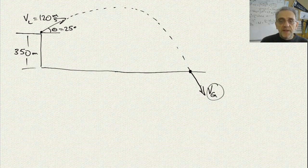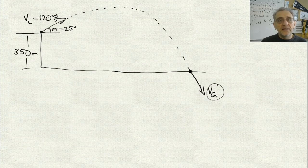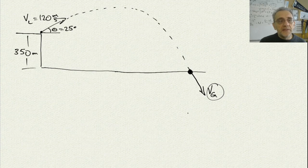Remember, velocity is a vector, therefore it has magnitude and direction. So we want to find the speed at which it hits the ground and the direction at which it hits the ground. Now here's a hint before you begin this problem: we don't actually need to find time. Go ahead and pause the video now and give it a shot.